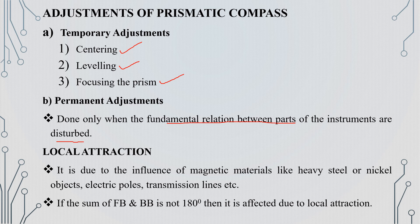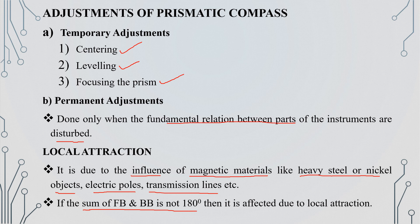The next topic is local attraction. Magnetic materials influence compass readings. To detect local attraction, the difference between back bearing and fore bearing should be 180°. If the fore bearing and back bearing sum to 180°, there is no local attraction at that station.